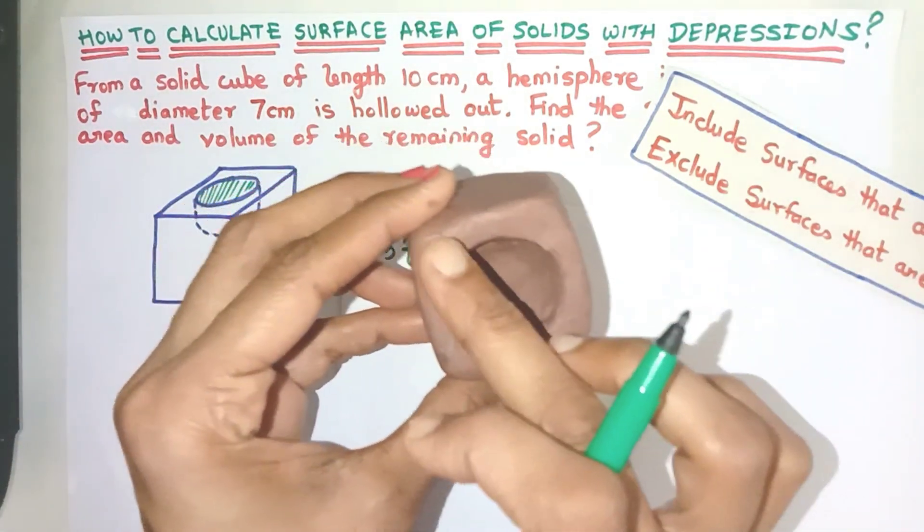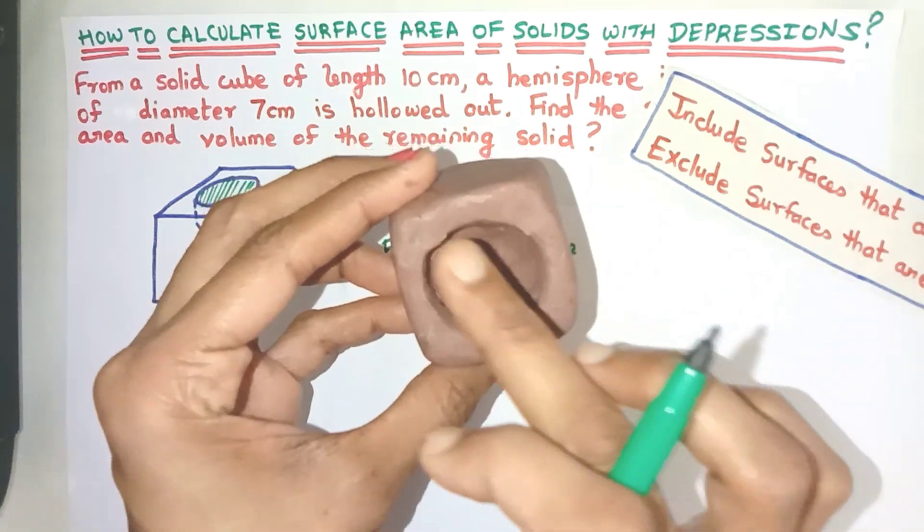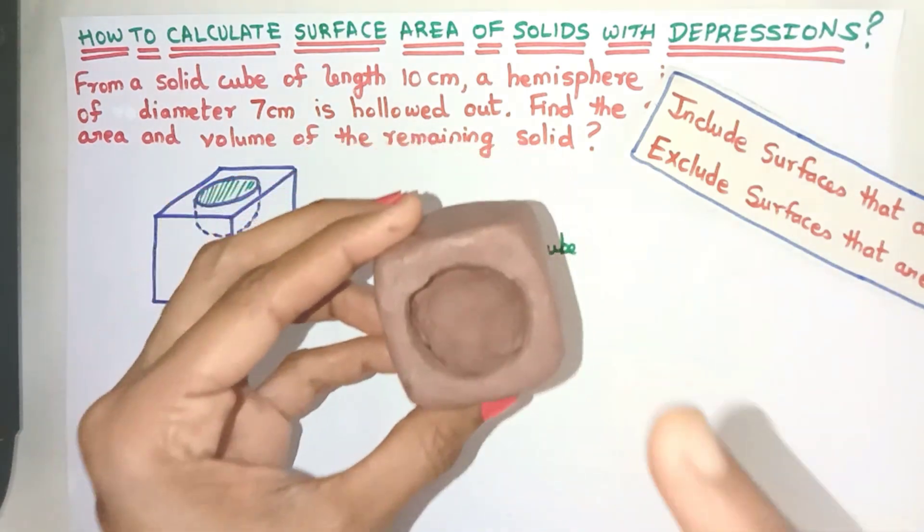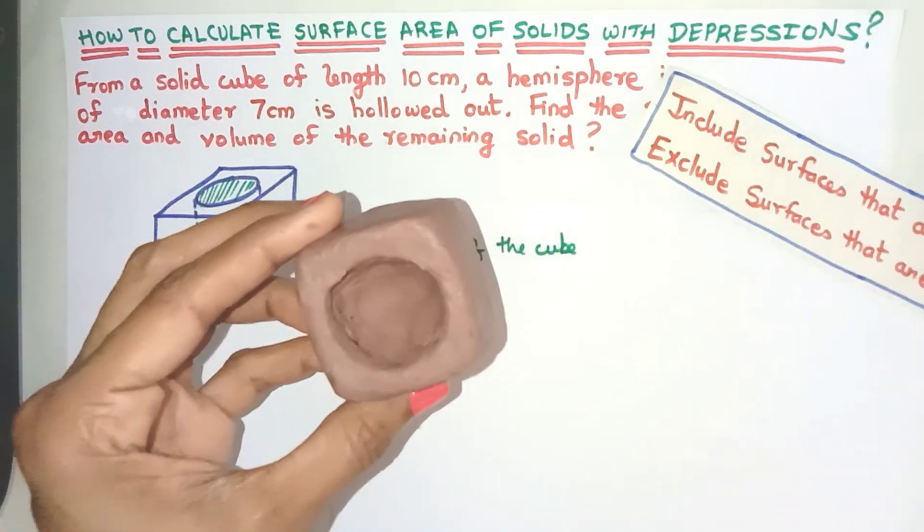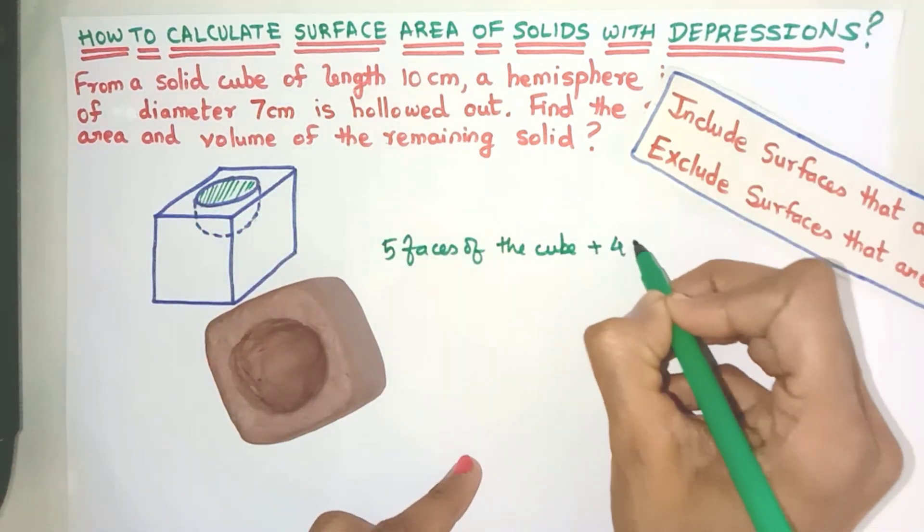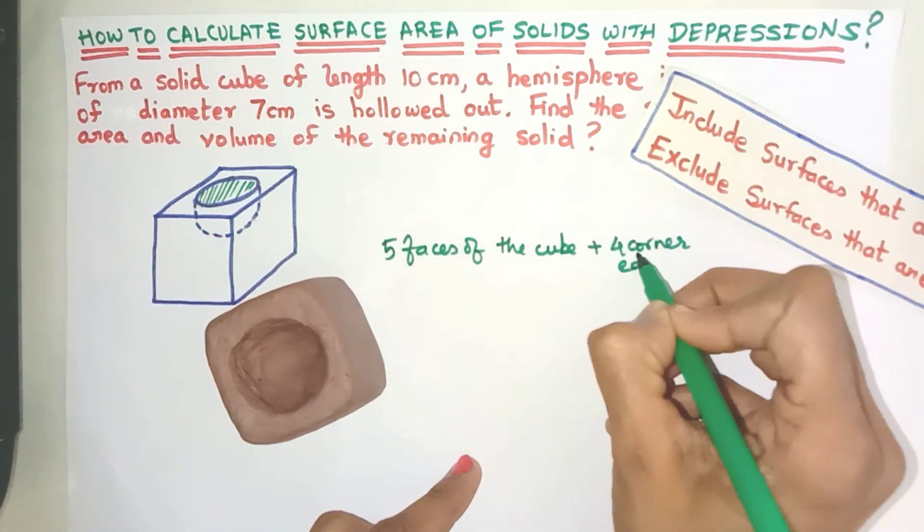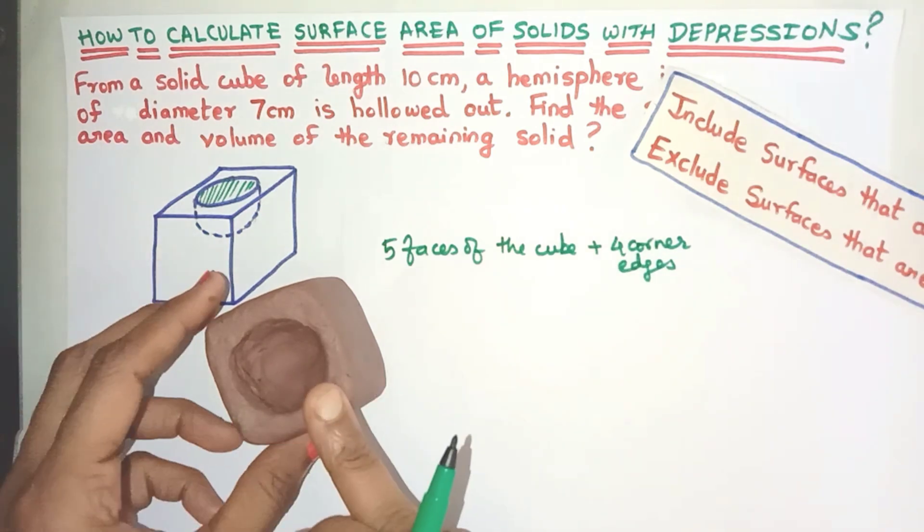Also if you see, in the sixth face, the entire face is not removed - these corner edges are still there, they are still visible so we have to include them also. So let me add the four corner edges also have to be included.